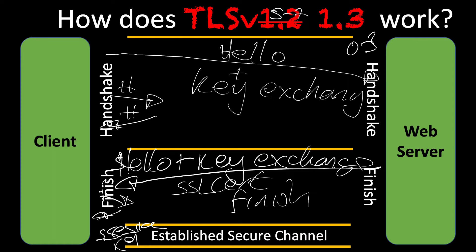A couple of other things to bear in mind with TLS 1.3: there are no options — we're not giving any options for selecting cipher suites or even choosing the TLS version. There are no static RSA handshakes; it's a full handshake with signature. There's downgrade protection in version 1.3. It deprecates some of the weaker ciphers like SHA-1 and MD5. There's no renegotiation — all the weaker stuff has been removed, and that's what makes version 1.3 more secure, because it uses more secure protocols and provides no negotiable options.